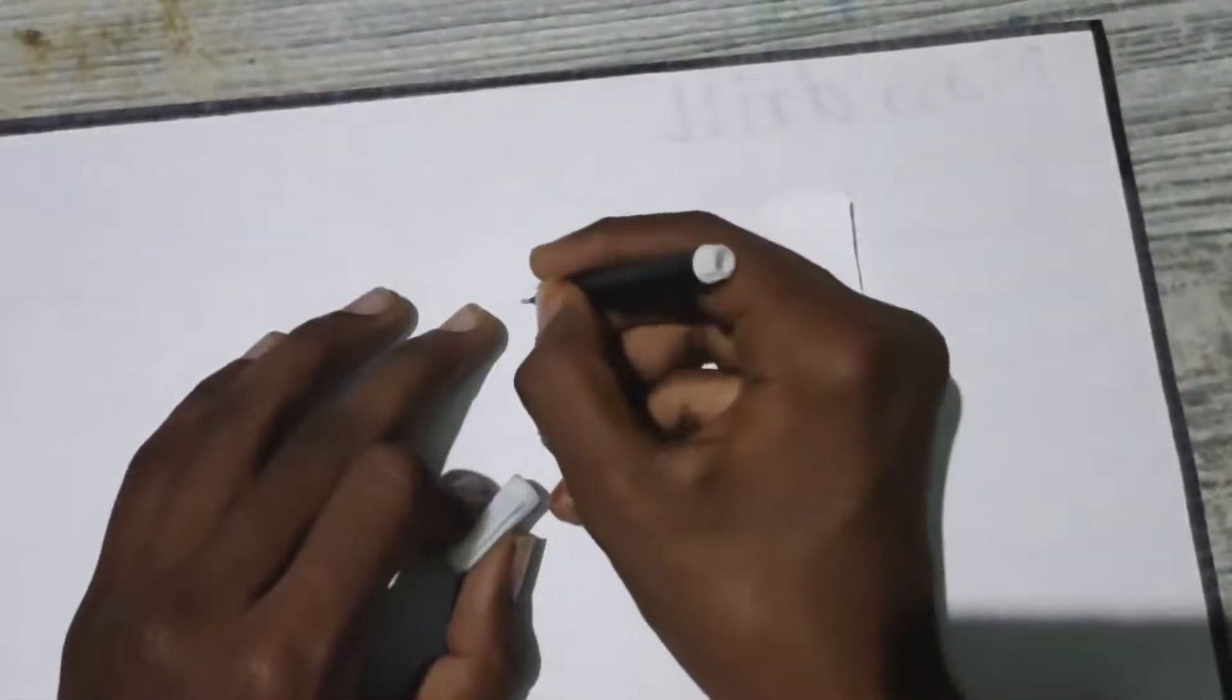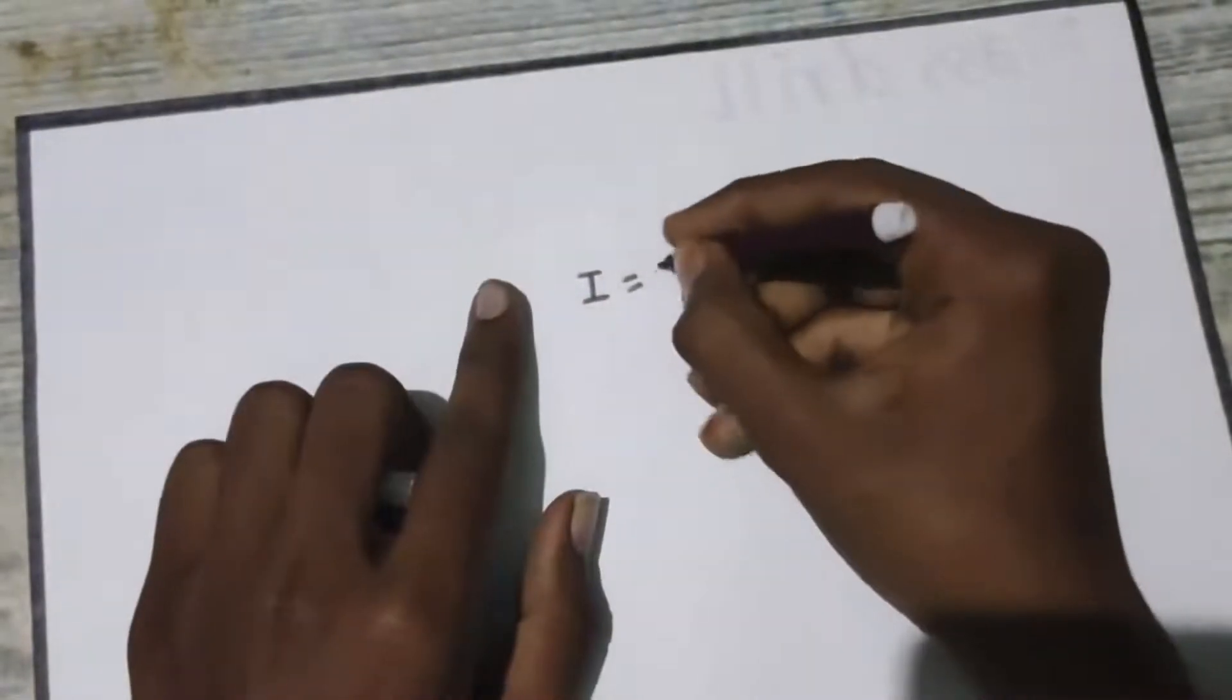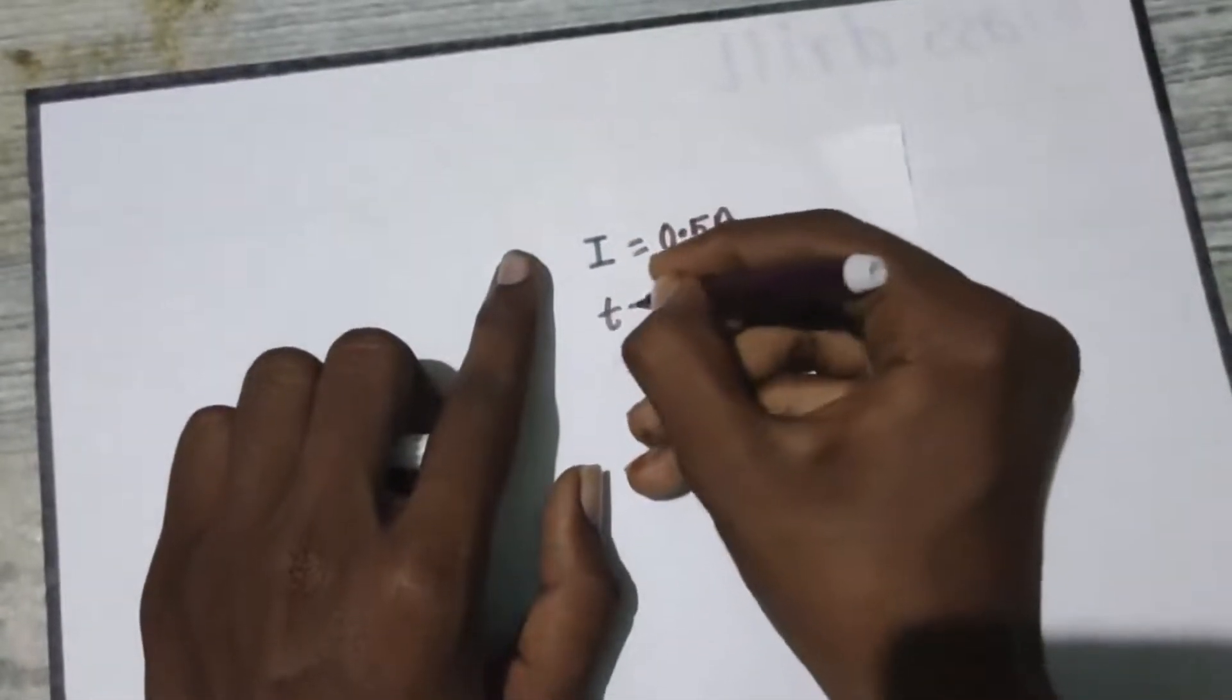So what they have given? They have given the current. Write the current. What is the current value? That is 0.5A. Correct, 0.5A. Then tell that time is 10 minutes.